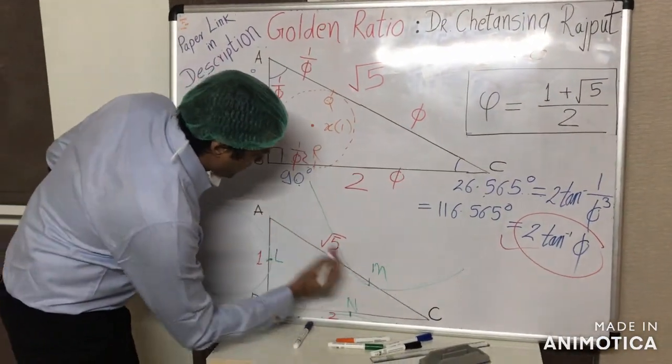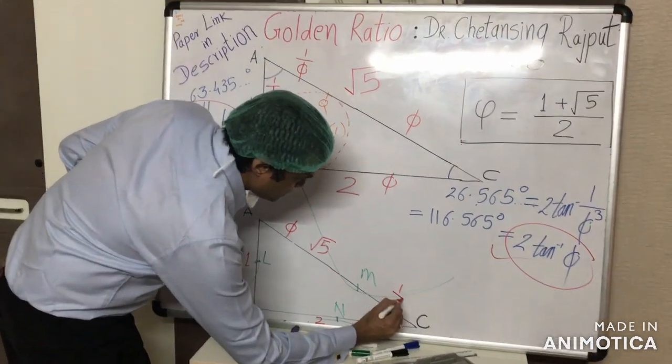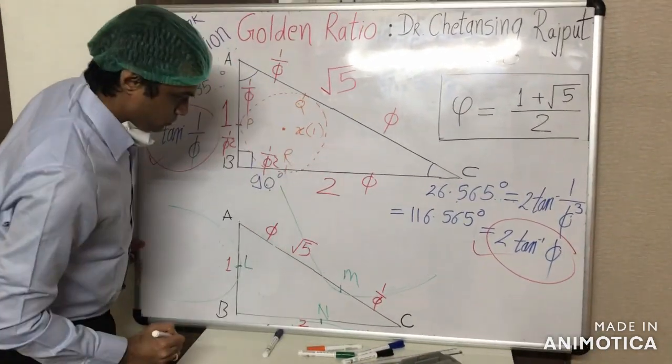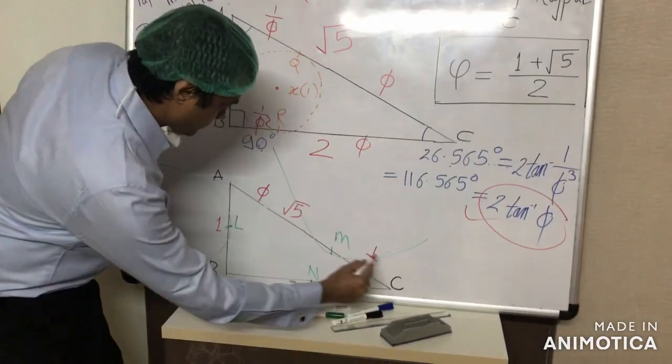Like, now this distance AM is equal to phi, and MC is inverse of golden ratio. This distance here MC, this is equal to 1 upon phi squared.